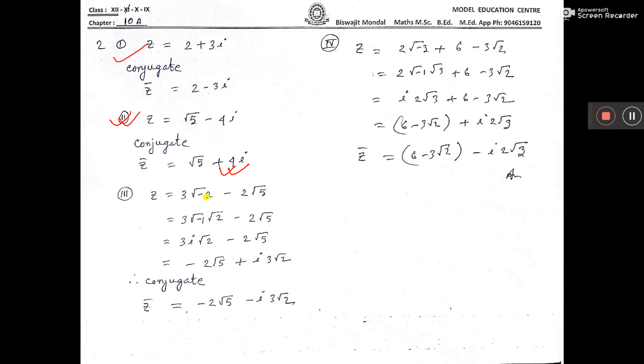You see here, root over minus 2 means you can write root over minus 1 into root over 2. This root over minus 1 means i, because the first day when I taught you complex numbers, I told you i is equal to root over minus 1. So in place of root over minus 1, you put i. So this is z.